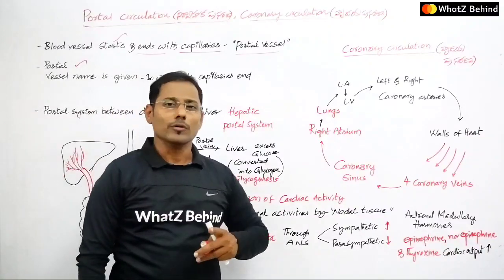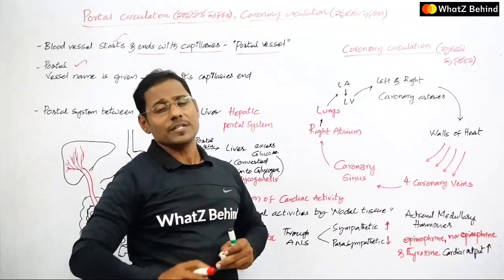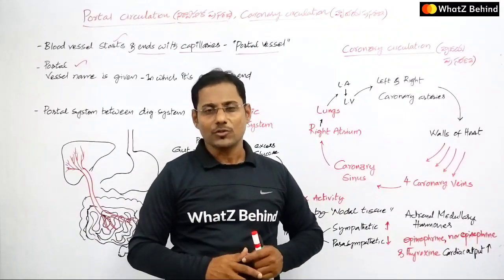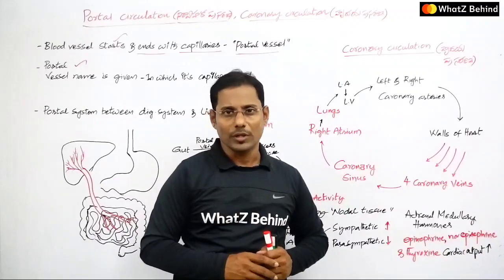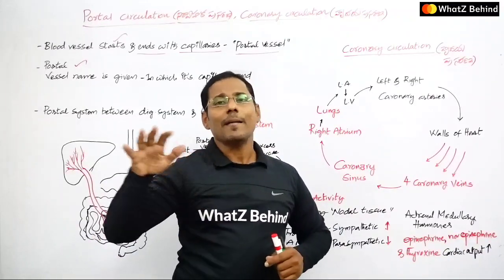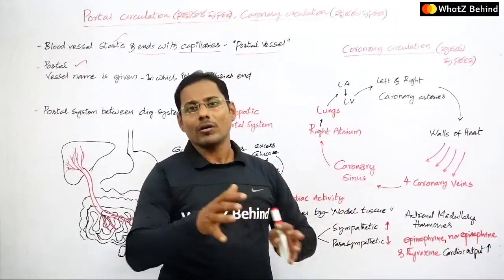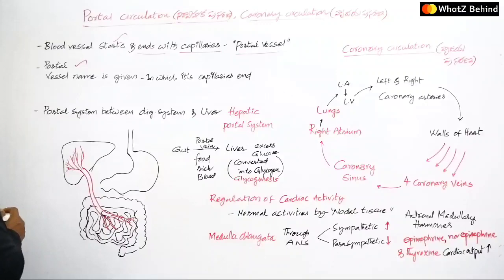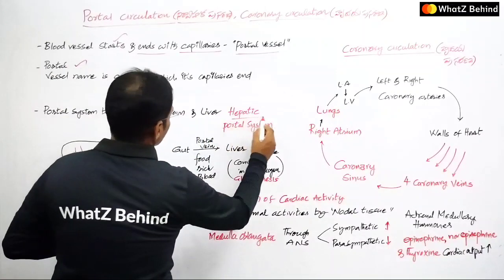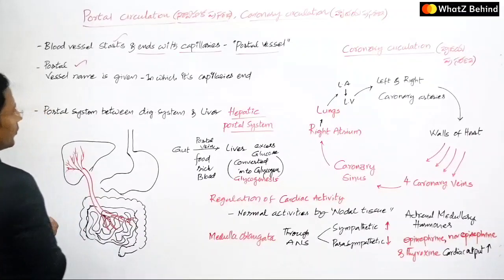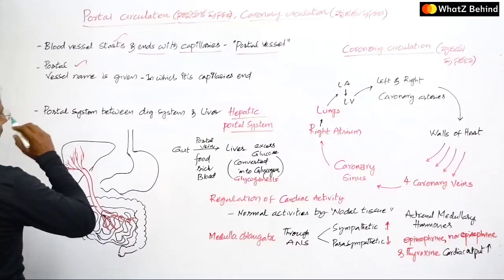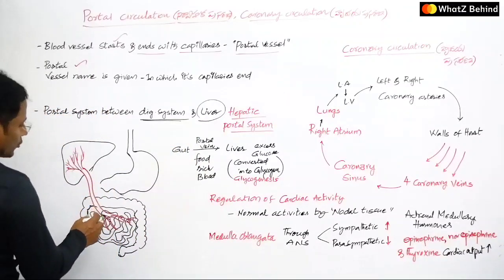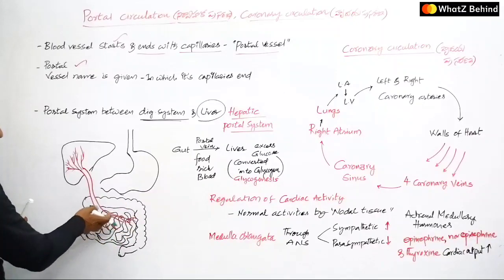So, how do we name a portal vessel? The name is given based on where the capillaries end — in which organ. Depending on that organ, the name is given to the particular portal blood vessel. In our body, one such system is called the hepatic portal system. This portal blood vessel is especially present between the digestive system and the liver.